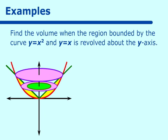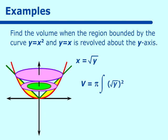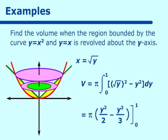Because our orientation is around the y-axis, our function has to be in y's. So instead of y equals x squared, we say x equals the square root of y, and the line is x equals y. Volume equals pi times the integral of the outer function — the square root of y quantity squared — minus the inner function y squared, all dy. The intersecting points go from y equals 0 to y equals 1. Computing that, we get pi times y squared over 2 minus y cubed over 3, from 0 to 1, giving a final answer of pi over 6.